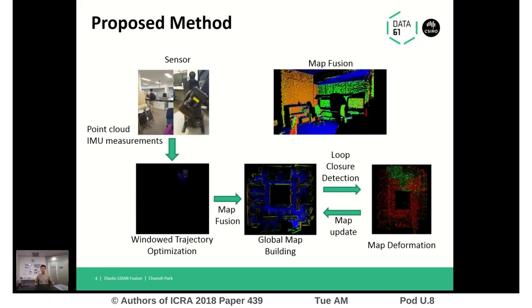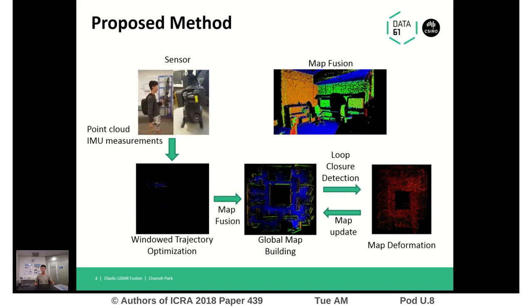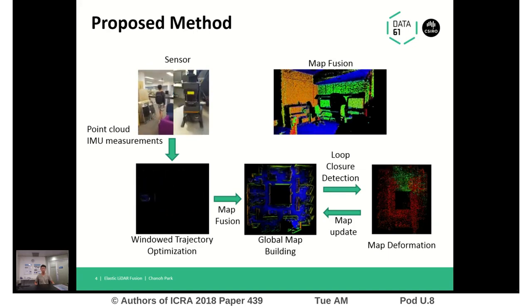Instead of carrying out global trajectory optimization, as a result of removing it, the system does not need any offline processing at all.